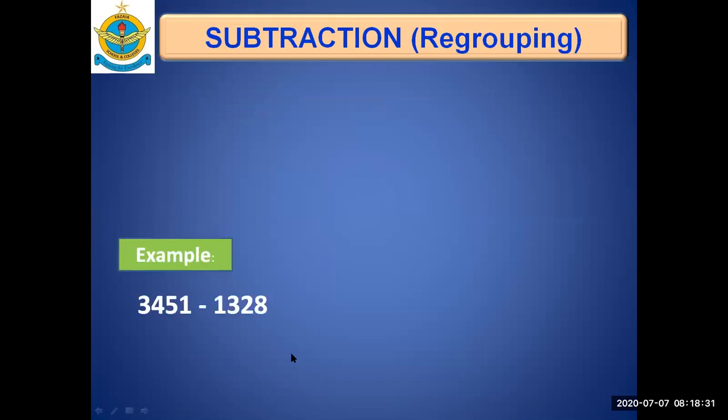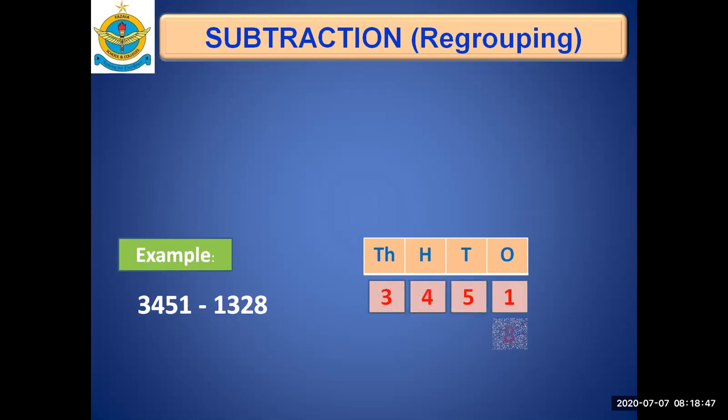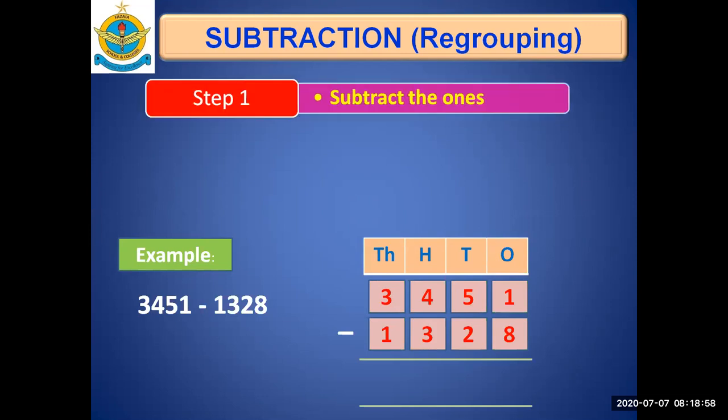Let's look at this example. We have two numbers: 3451 and 1328, and we need to find the difference. The number before the symbol will be written at the top, starting from ones obviously. And the number after the subtraction symbol will be written at the bottom. After writing the numbers accordingly, start the steps. Stepwise subtraction.